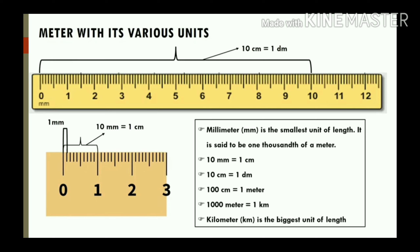A millimetre (mm) is the smallest unit of length and is one thousandth of a metre. The relations between units are: 10 millimetres equals 1 centimetre, 10 centimetres equals 1 decimetre (dm), 100 centimetres equals 1 metre, and 1000 metres equals 1 kilometre. Kilometre is the biggest unit of length.